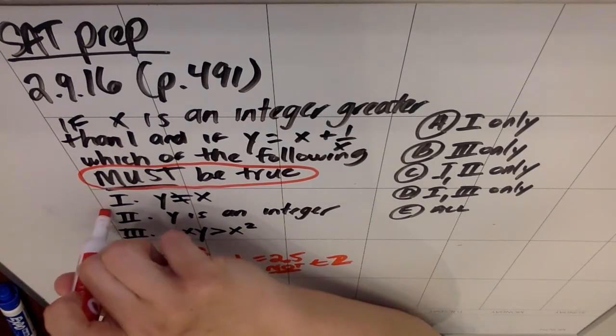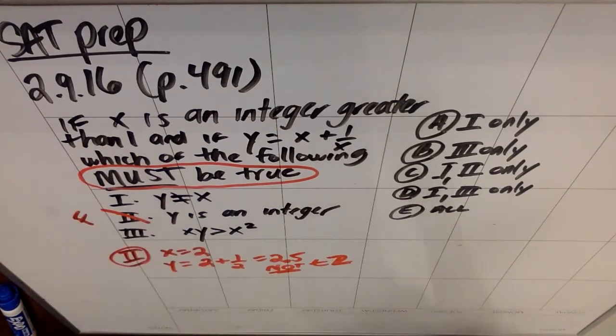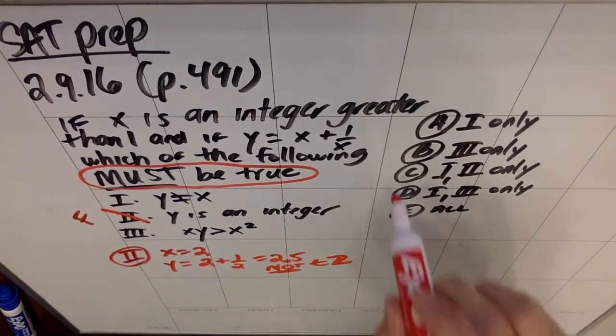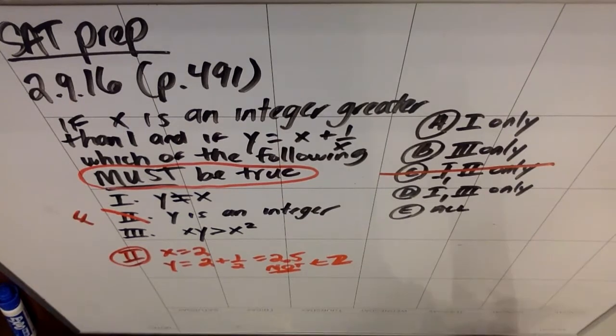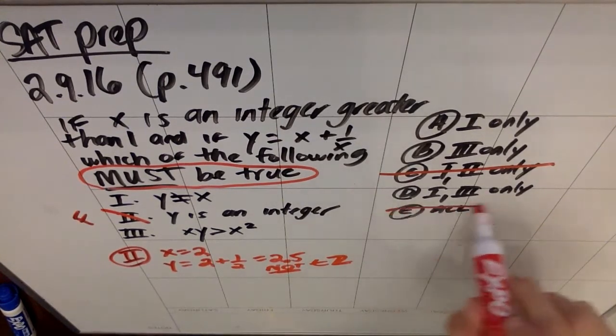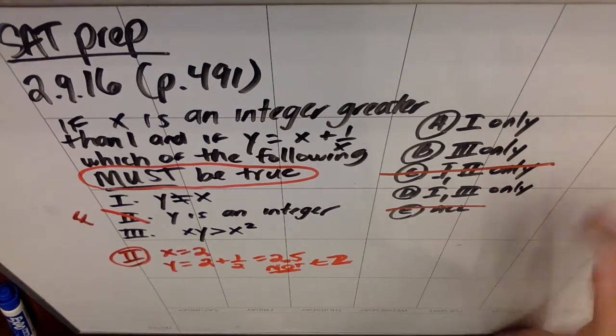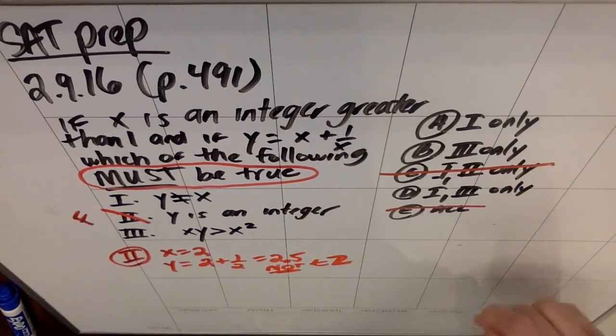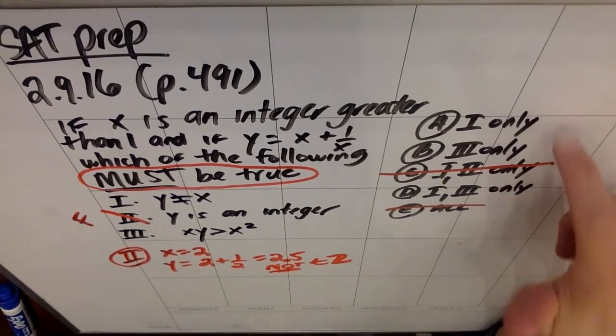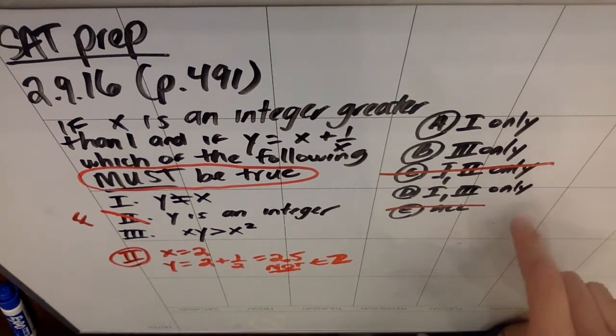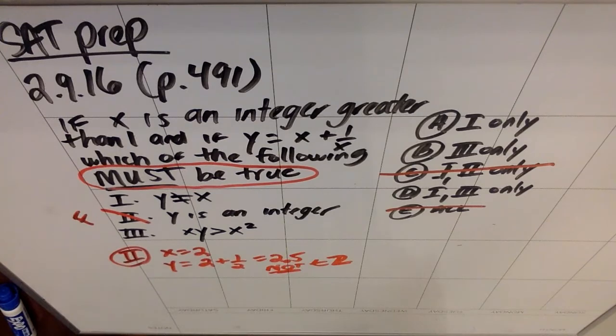So two is definitely false. And they said which ones must be true. So I can immediately cross off any answers that involve two being true, which is both answer C, one and two only, and answer E that says all of them. So now I'm really at the point where, unfortunately, I'm going to have to prove both one and three, because I either have answers that say one only, or answers that say three only, or an answer that says both of them work.